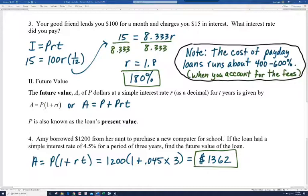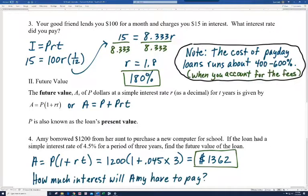Now, what if I said, how much interest did she pay? Well, it wouldn't be too hard to do that. It'd be the $1,362, the future value minus the present value, $1,200. And you can see that she paid $162. Now you could also use the formula PRT and that would work too. All right. Let's move on to the last slide.